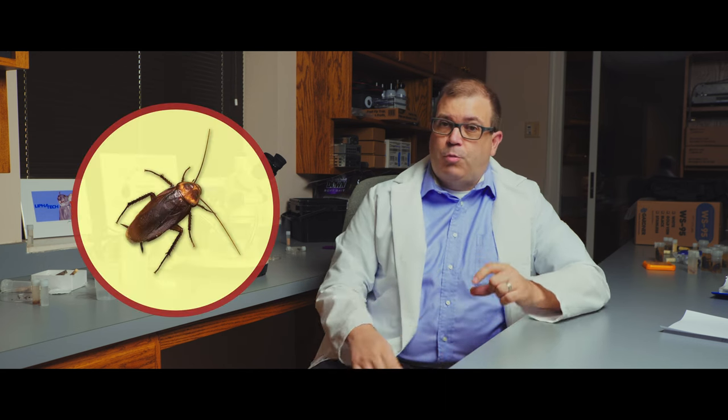All right, so different cockroaches, they all look a little different. Americans are larger. They're probably about this big. You know, an inch and a half or so. They've got like an auburn brown color.